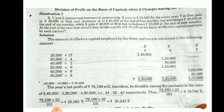X invested for the whole year — 12 months. So X has 20,000 multiplied by 12 equals 2,40,000. Then Y has 30,000 rupees for 4 months, which gives 1,20,000. Then for the next 2 months with an additional amount it becomes 80,000. Then Y invested 20,000 for 6 months. This gives us Y's total capital figure.